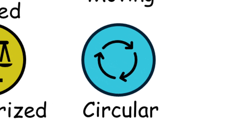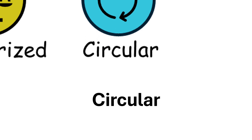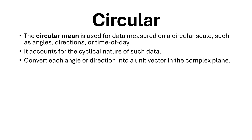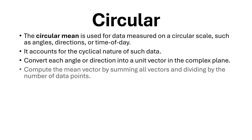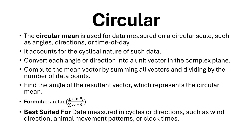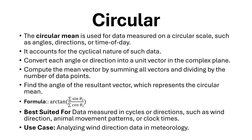Circular mean. The circular mean is used for data measured on a circular scale, such as angles, directions, or time of day. It accounts for the cyclical nature of such data. To compute it: convert each angle or direction into a unit vector in the complex plane, compute the mean vector by summing all vectors and dividing by the number of data points, then find the angle of the resultant vector, which represents the circular mean. The formula is as shown. Best suited for data measured in cycles or directions, such as wind direction, animal movement patterns, or clock times. Use case: analyzing wind direction data in meteorology.